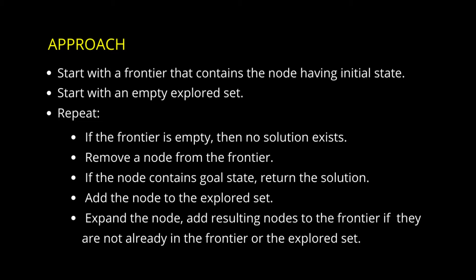Start with a frontier that contains the node having the initial state, and start with an empty explored set. Then repeat the following steps: if the frontier is empty, then no solution exists. Remove a node from the frontier. If the node contains the goal state, return the solution. Add the node to the explored set. Expand the node, and add resulting nodes to the frontier if they are not already in the frontier or the explored set.